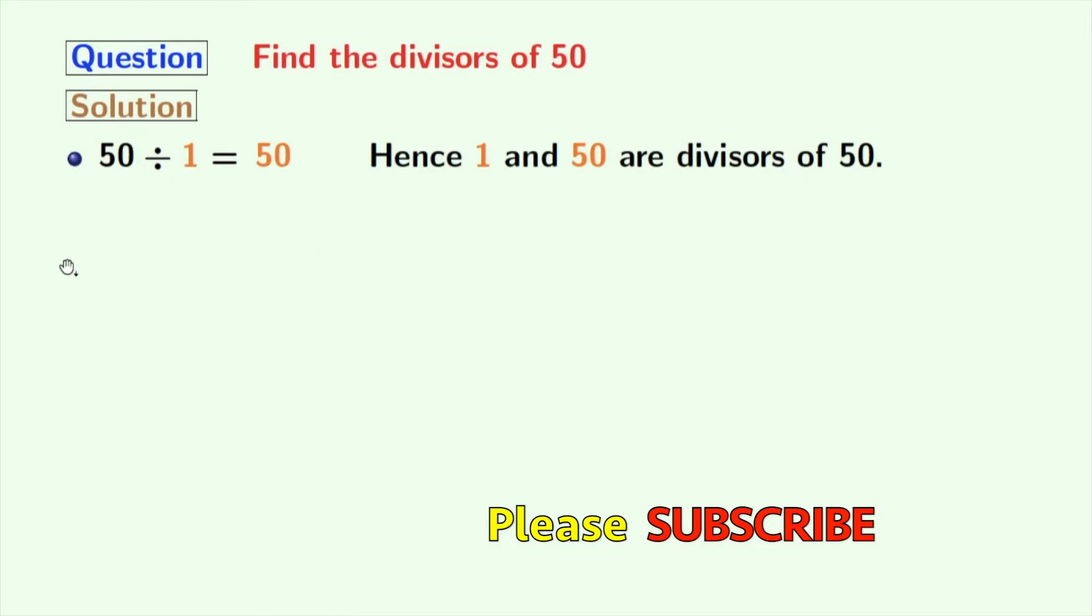Now if we try for 2, we get 25. So 2 and 25 are the divisors of 50.